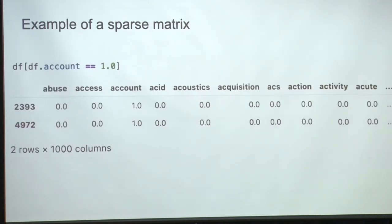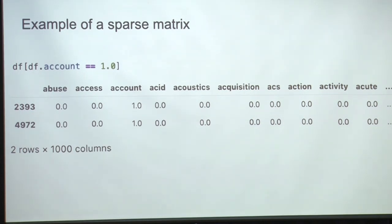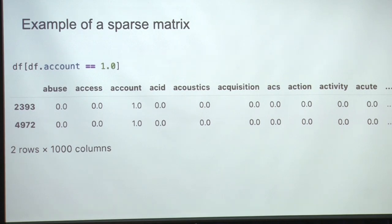Here's an example of a sparse matrix from TF-IDF. You see a column of words across and two rows representing journals — showing me the journals where the word 'account' comes up in the titles. Essentially you just have a whole bunch of zeros with a few ones, and it's much faster to compute predictions based on this.